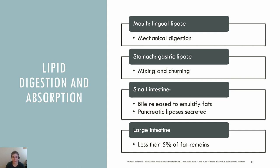When less bile is recycled and instead eliminated in the feces, more needs to be taken out of the blood to restore the bile supply, which helps to decrease blood cholesterol levels. Once inside the intestinal cells, monoglycerides and fatty acids reassemble into triglycerides. Short and medium-chained fatty acids and glycerol can be directly absorbed into the bloodstream, but triglycerides, cholesterol, and fat-soluble vitamins need to be transported through what's called chylomicrons. By the time we get to the large intestine, less than 5% of fat remains, and this is excreted from the body via the feces.